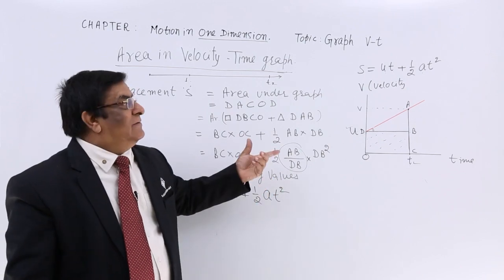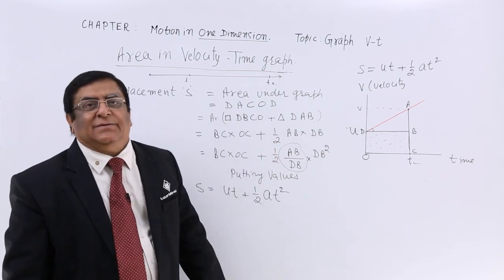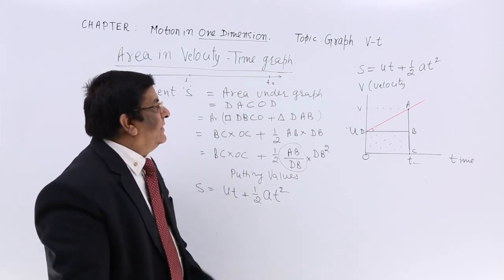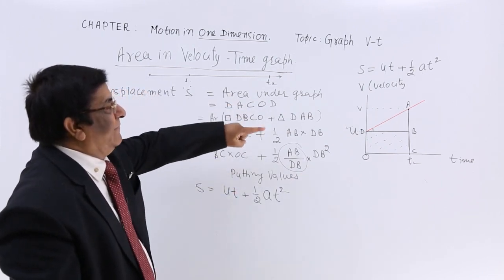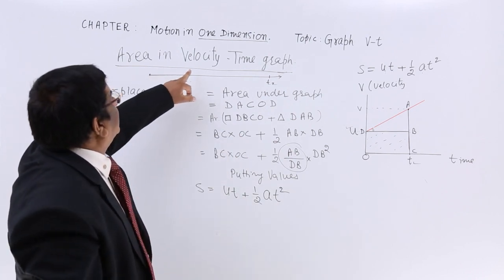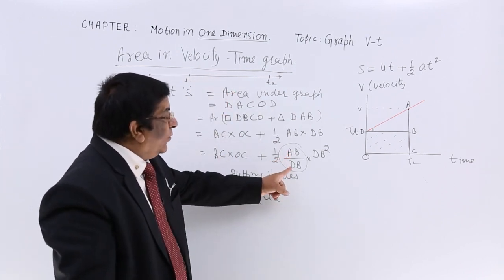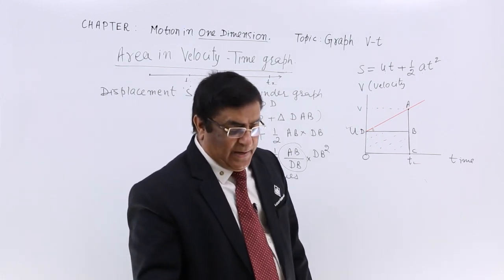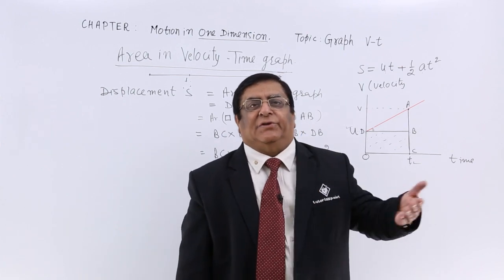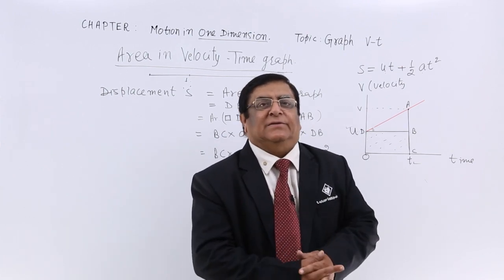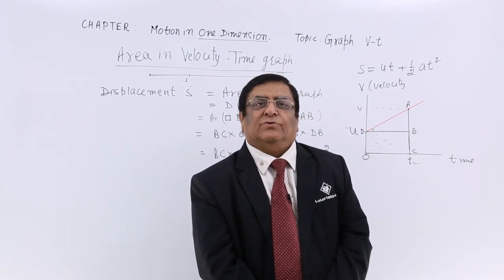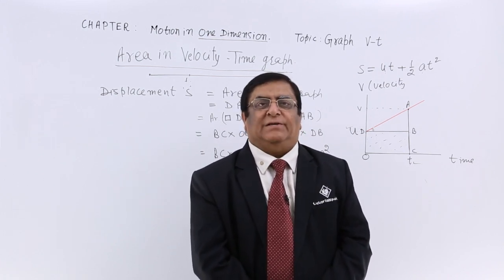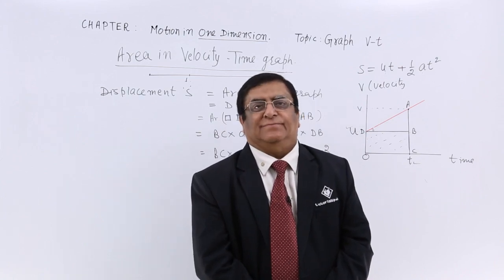This is derivation by graphical method. It is very popular choice of the examiners to ask. So this is how we can derive it. This is area in velocity-time graph. This is slope in velocity-time graph. So we have studied both of them. And this is all about velocity-time graph. And then we will use it in the different numericals which are about to come. So in the next lecture we will see how do we form numericals and how do we solve it in one-dimensional motion. Thank you.